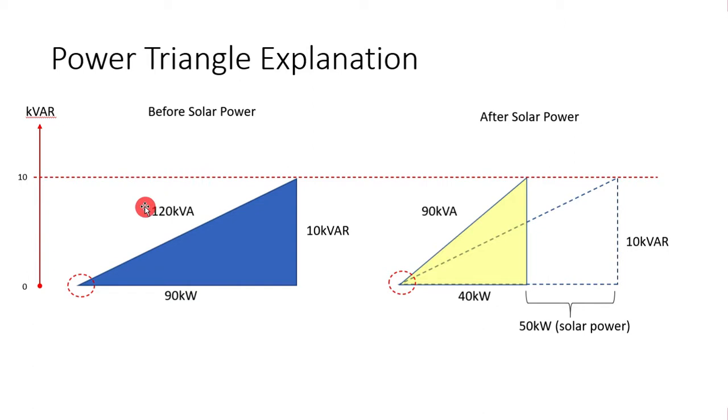this is your original power triangle whereby the reactive power consumed by the load doesn't change. It's still 10kVAR, right? And then the amount of power needed for the load is also in total is 90kW. So, you see this dotted line. This is original, right? It doesn't change.